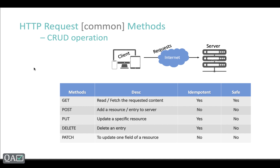Now what about safe methods? Safe methods are those where you are not making any change to your server. A GET request is safe — every time you do a GET you're not changing anything. Whereas POST, PUT, DELETE, and PATCH all make changes to your server. For example, if your location is India and you do a GET you get India back. But if someone does a PUT to change it to USA, your next GET returns USA — you didn't get the expected result.